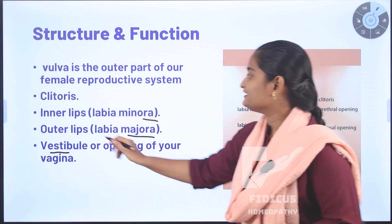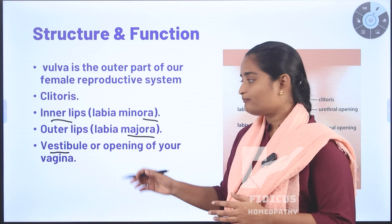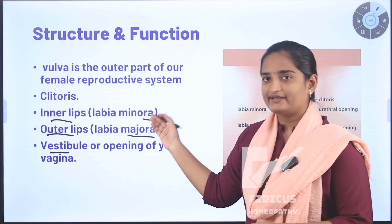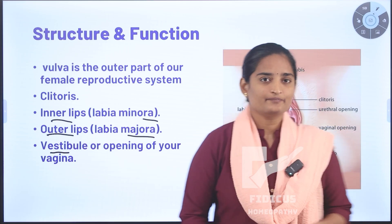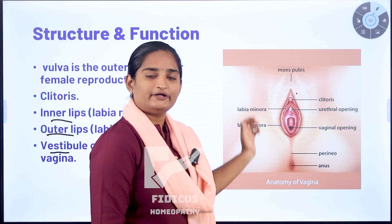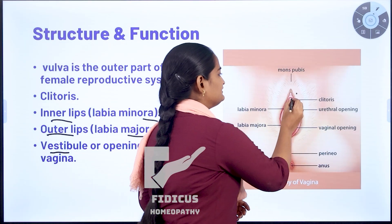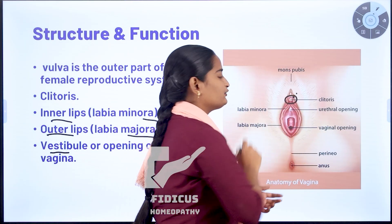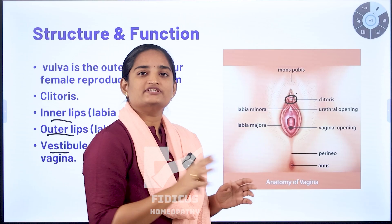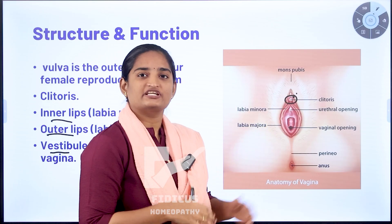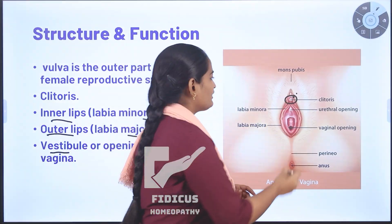Labia minora is also called as inner lips. Labia majora is also called as outer lips. This is the external reproductive system. This part is the clitoris. This is the most sensitive part and this clitoris helps in sexual function.